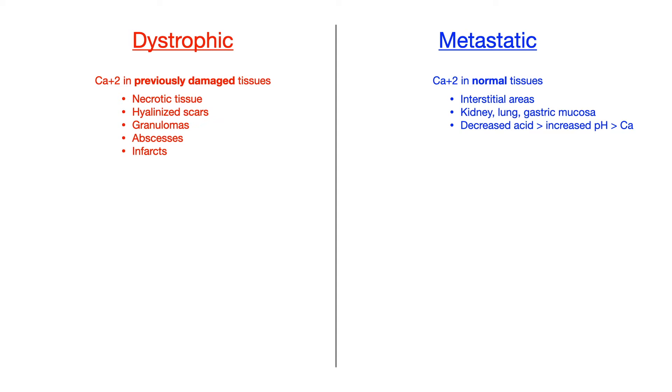The reason that we predominantly see metastatic calcification in kidney, lungs, gastric mucosa, and blood vessels is because these are areas or organs or tissues that have a tendency to lose acid quickly.